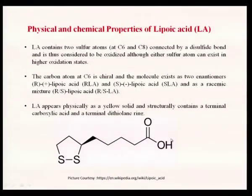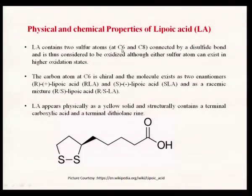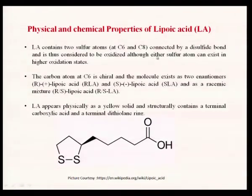If you look at this structure, it is very interesting — a long chain acid, octanoic acid, with two disulfide bridges being formed at carbon 6 and carbon 8. You have two sulfur groups connected by a disulfide bond, and this is considered to be the oxidized form. In the reduced version you would have an SH thiol group, but in the oxidized version you have a disulfide bond.